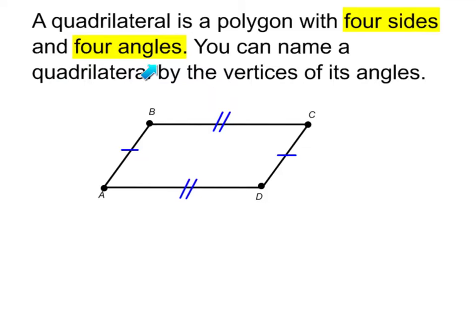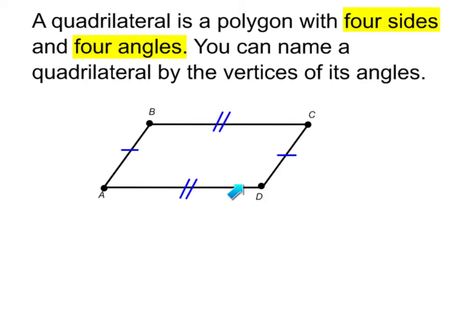You can name a quadrilateral by the vertices of its angles. For example, I see that line segment AB and line segment CD are parallel to one another and they're the same length. And then line segment BC and line segment AD are also parallel to one another and they are the same length. We'll be figuring out what this quadrilateral is later on.